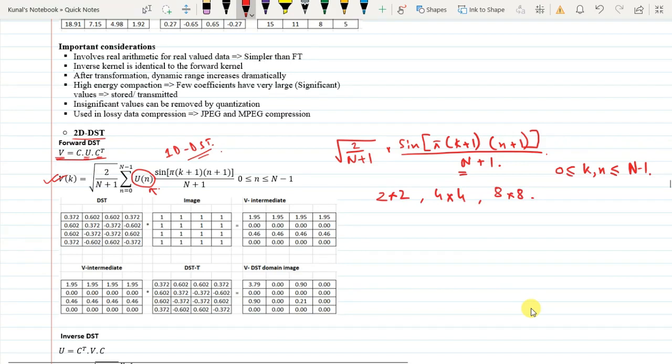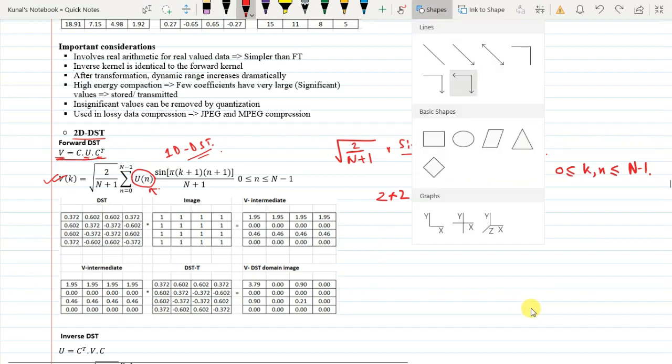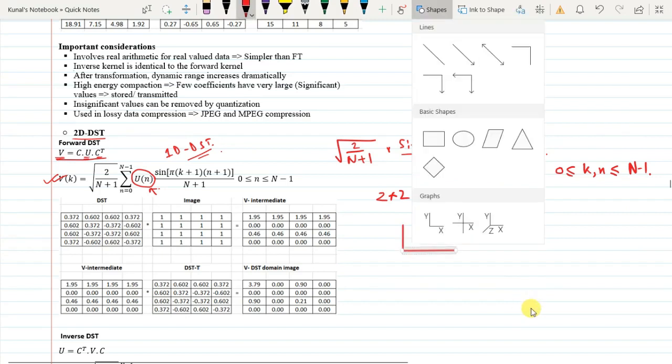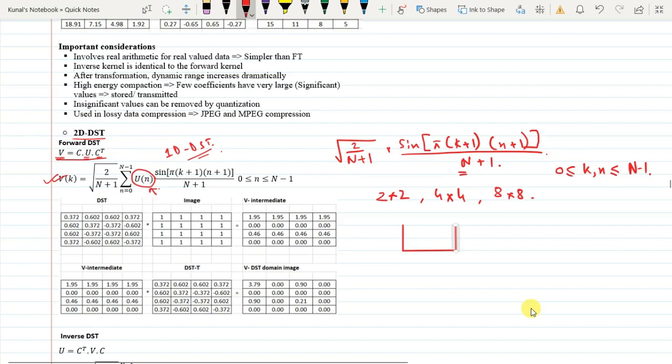This k and n will vary from 0 to capital N minus 1. Let us calculate the value of this DST matrix of 2 by 2, 4 by 4, and 8 by 8. It is similar to the discrete cosine transform.